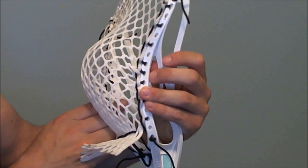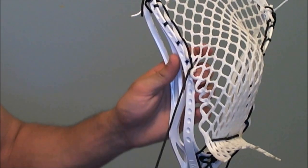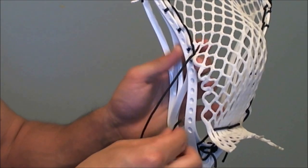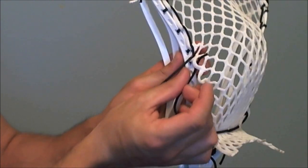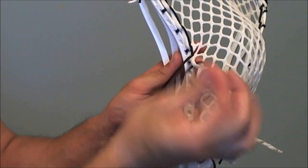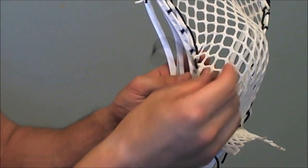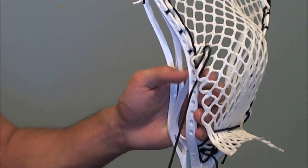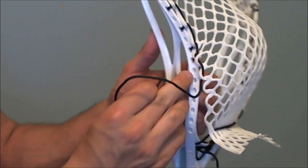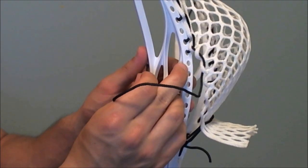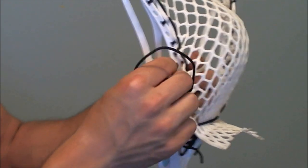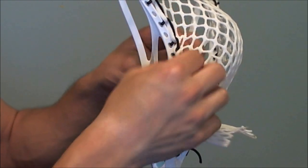And then, we are going to do a one SI to create our pocket. So for a one SI, we're going to go up and under the next hole of mesh, and then down through the top, through the back of the one after that. Then we're going to go right into the next sidewall hole, so we're going to be very close to the other one, really scrunching together to create that pocket.